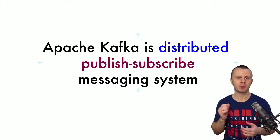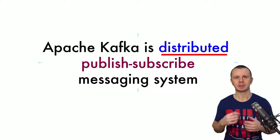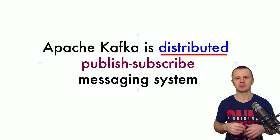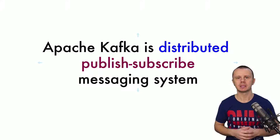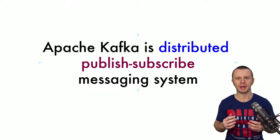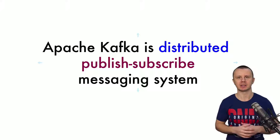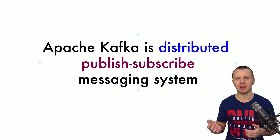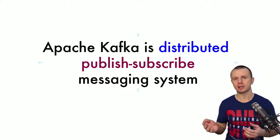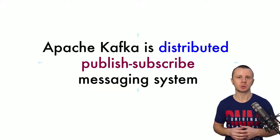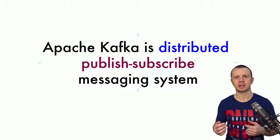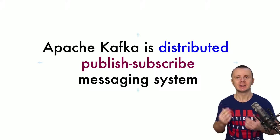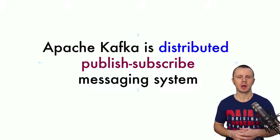The last point in this definition is distributed. Distributed means that Apache Kafka is a fault-tolerant, resilient system with the ability to create large clusters with many different servers. Whenever any of the servers fail — or even multiple servers fail — other servers will continue operation and continue serving publishers and subscribers. If everything is set up correctly, not even a single message will be lost.